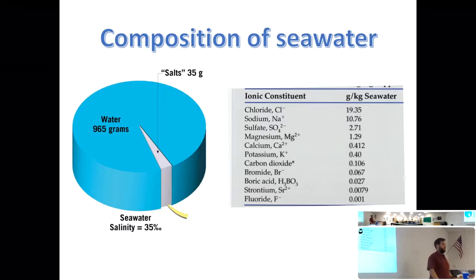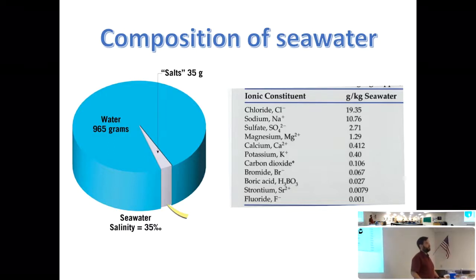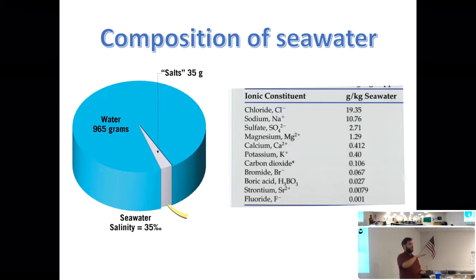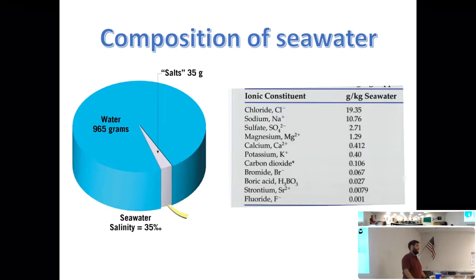The next most common constituents are sulfate and magnesium. So the second most common salt in seawater is magnesium sulfate — also known as Epsom salt. People use it in baths for sore muscles after athletics. So basically, salt water is mostly table salt and Epsom salt — sodium chloride and magnesium sulfate.